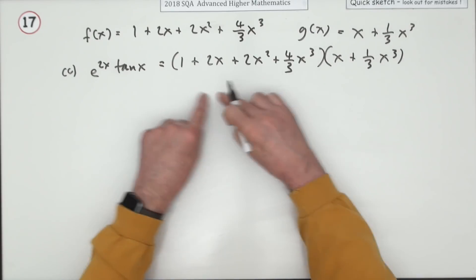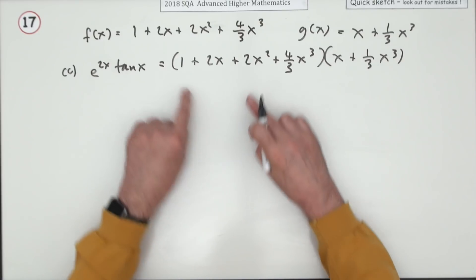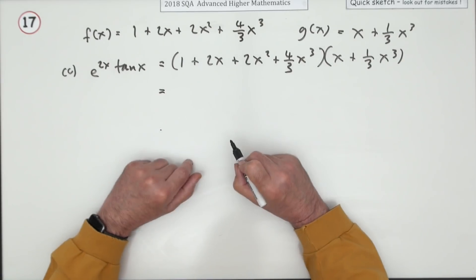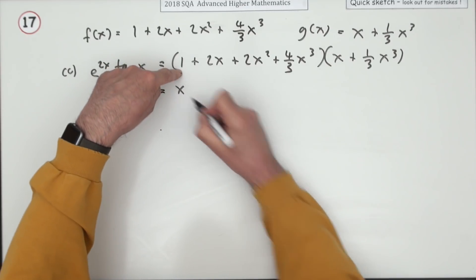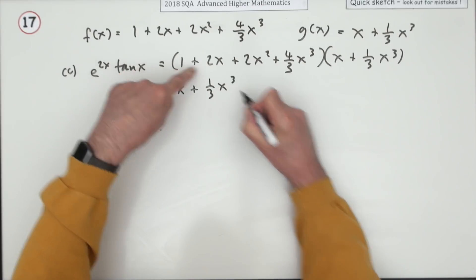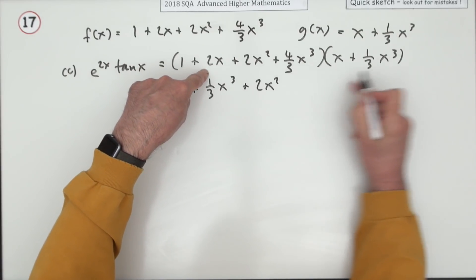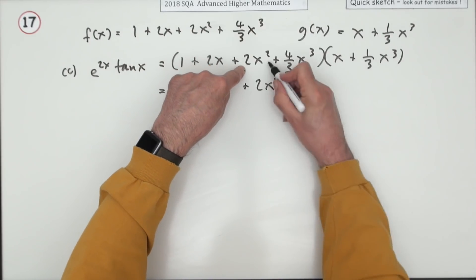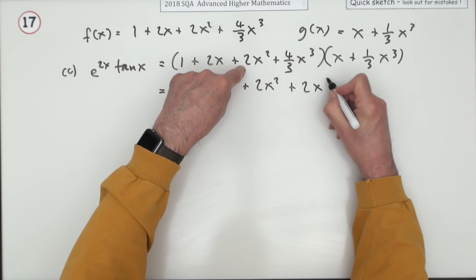But you only want the product up to the term in x cubed. Now there's four, two, there's eight different products here, but they're all not going to appear. One times x, that's fine. One times x cubed, that's still fine. Two x times x, that's two x squared. Two x times that, that's power four, no use. Two x squared times x, that's two x cubed. Times that, that's power five.